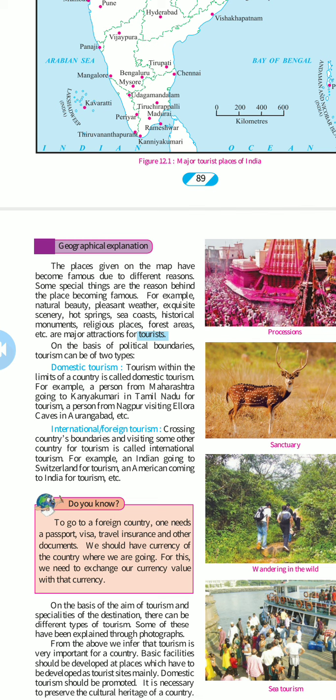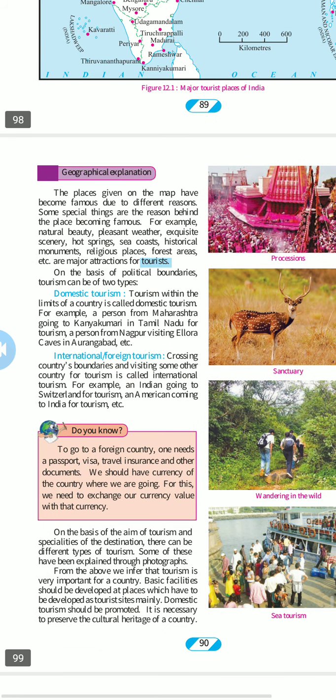Tourism is divided on the basis of political boundaries into domestic tourism and international tourism. Tourism within the limits of a country is called domestic tourism. For example, a person from Maharashtra going to Kanyakumari in Tamil Nadu, or a person from Nagpur visiting Ajanta caves in Aurangabad. Domestic tourism means traveling within India only — from Mumbai to Kashmir or from Kolkata to Kanyakumari.